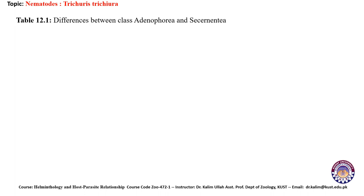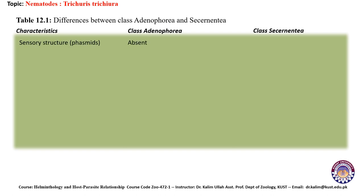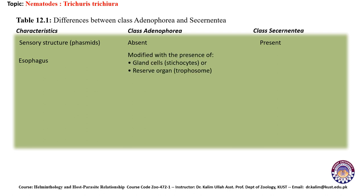The differences between Class Adenophora and Class Secernentata are as follows. First, sensory structures called phasmids are absent in Class Adenophora but present in Class Secernentata. Regarding the esophagus, it is modified with the presence of gland cells or a reserve organ in Adenophora, while it has a normal appearance in Secernentata. Based on excretory organs, they are without lateral canals in Adenophora, while they have lateral canals in Secernentata.